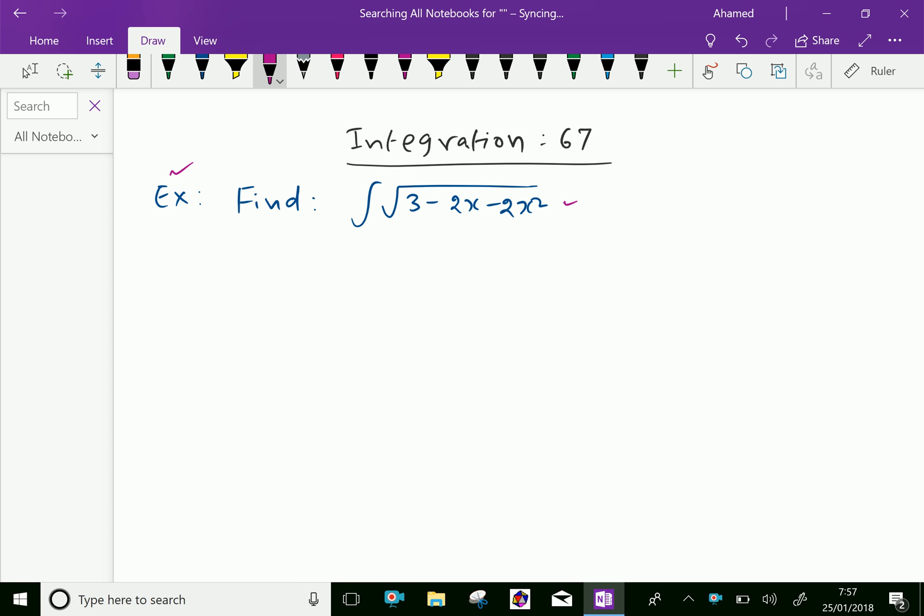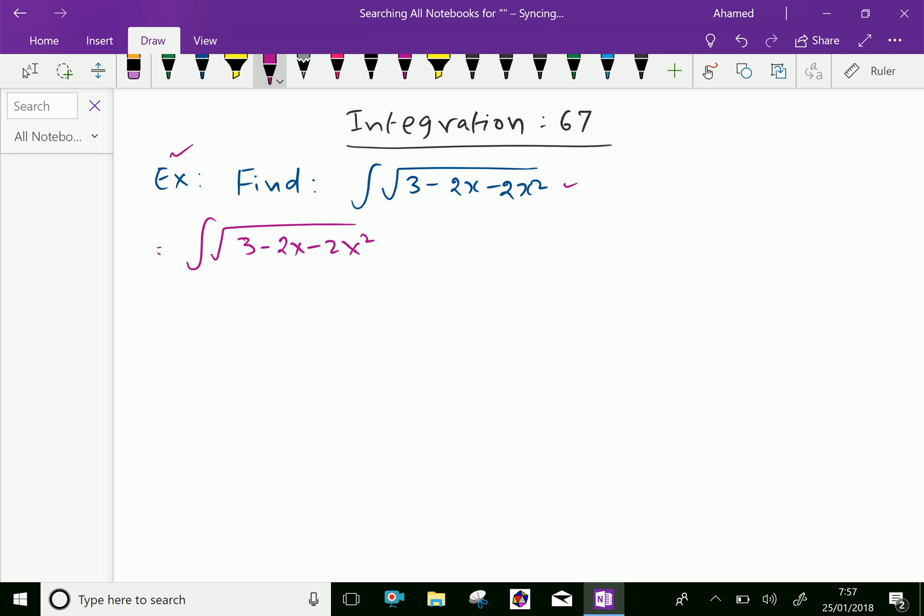Now, let us write the given function inside the integration, that is inside the square root: 3 minus 2x minus 2x square. Now, first, take out minus out and change to 2x square plus 2x minus 3. You put dx.